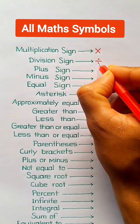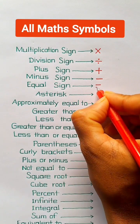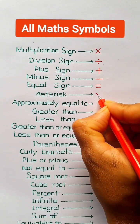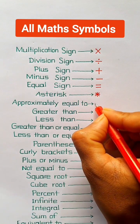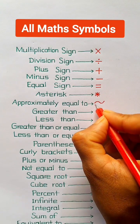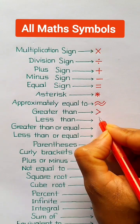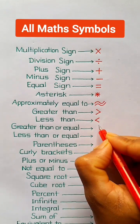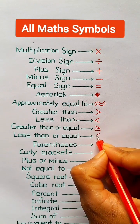Division sign, flash sign, minus sign, equal sign, asterisk, approximately equal to, greater than, less than, greater than or equal.